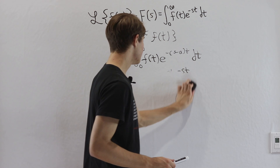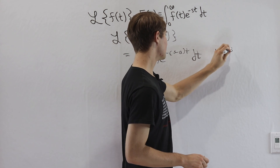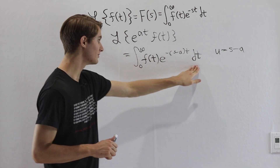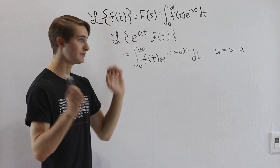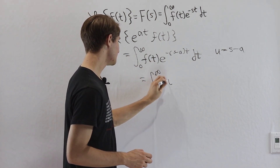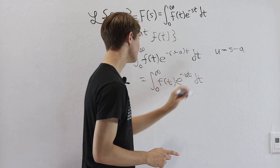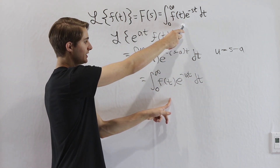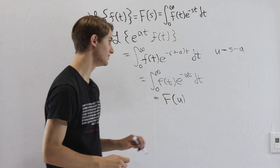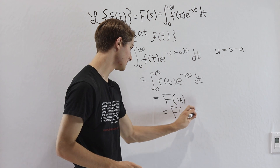Now we can substitute u equal to s minus a. Since we're not integrating with respect to s or a, we don't need to find du — all we do is recognize that the integral from 0 to infinity of f(t)·e^(−ut) dt is exactly the definition of the Laplace transform, but in terms of u instead of s. So we get F(u), and substituting back, this equals F(s − a).